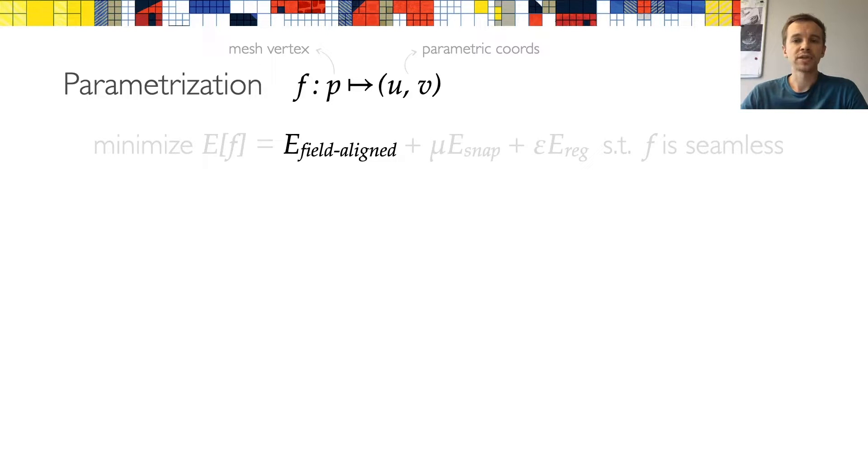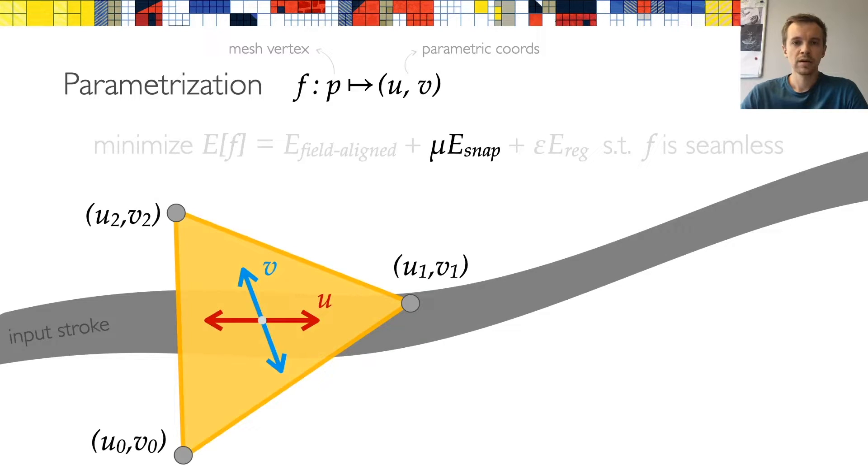This was the first term in our parameterization energy. The second term is responsible for snapping the grid iso lines to the input strokes. To understand how we do the snapping, let's consider a single triangle that is lying on an input stroke and has a frame from the computed frame field. We can determine which frame direction is the tangent direction with respect to the stroke, and I will describe how we do that in a minute. Let's say that it's the u direction. This means that we want the vertices of the triangle to be close to a u isoline in the parametric space. And therefore, their parametric v coordinates should be integers.